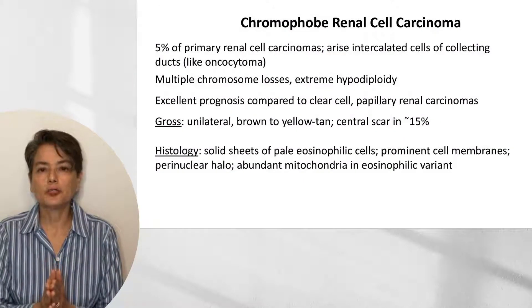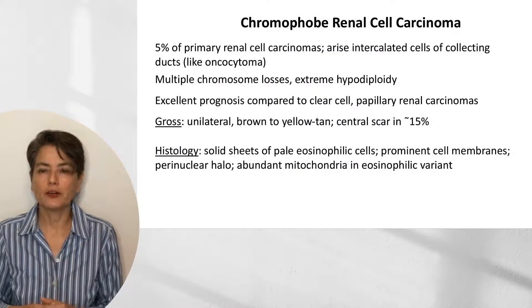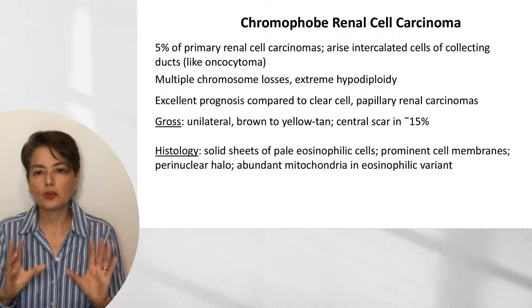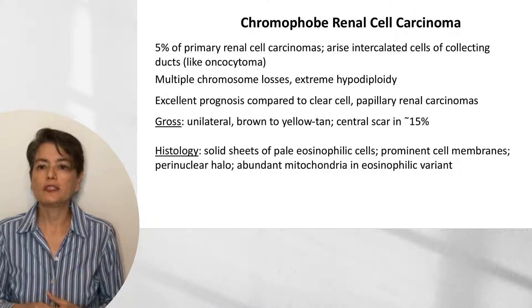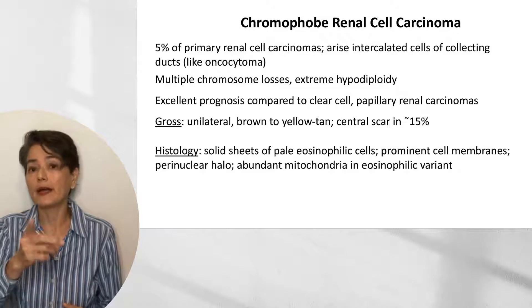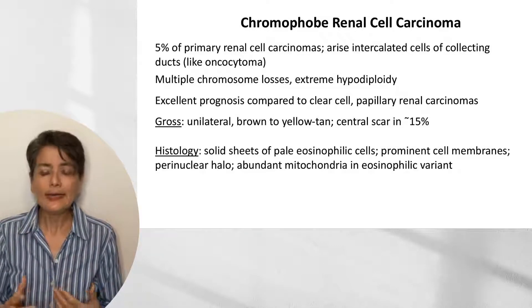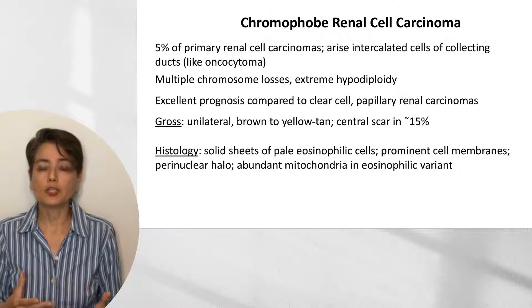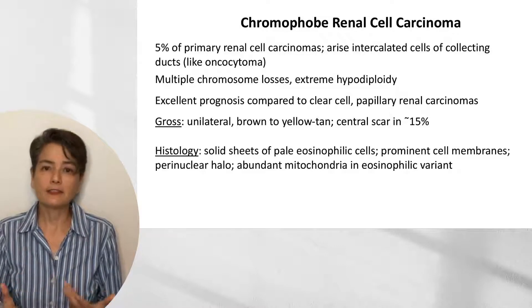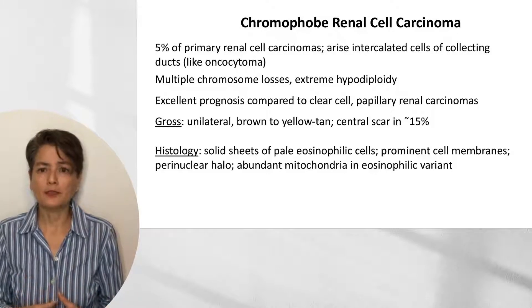This brings us to chromophobe renal cell carcinoma — the rarest of the primary renal cell carcinomas, thought to arise from the intercalated cells of the collecting duct, like oncocytoma. Unlike the other two variants, the pathophysiology is less clear; these tumors tend to have multiple chromosome losses and extreme hypodiploidy, and the exact mechanisms and pathways are not well understood.